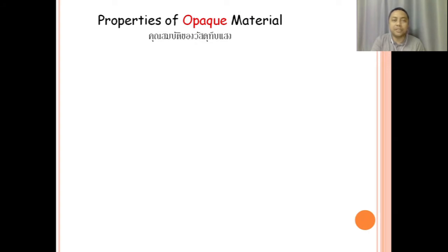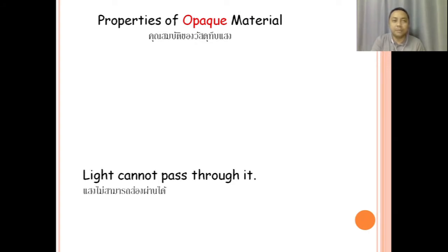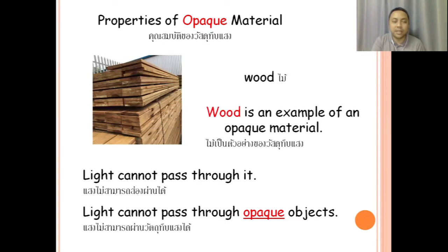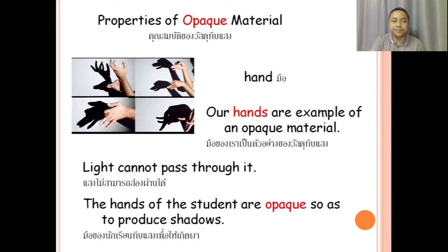Properties of opaque material. Opaque material does not allow light to pass through it — light cannot pass through it. Light cannot pass through opaque objects. For example, wood — wood is an example of an opaque material. Also our hands — our hands are an example of an opaque material. Light cannot pass through them; the hands of the student are opaque so as to produce a shadow.